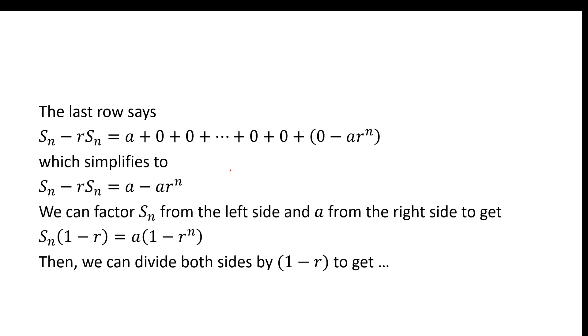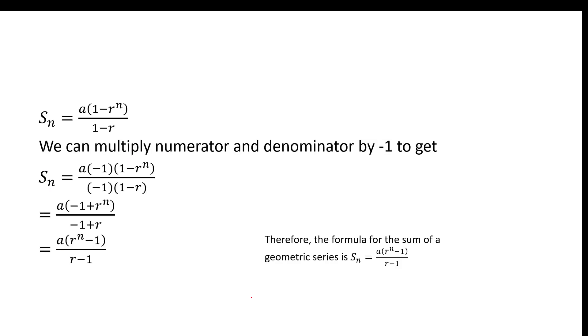Now what we can do is isolate S_N. Remember what we're trying to solve for, we're actually just trying to solve what is the sum of the first N terms. So we can common factor S_N from the left-hand side. We have S_N times 1 minus R, and that equals A times 1 minus R to the N. Then what we can do is divide both sides by 1 minus R, and we'll get S_N equals A times 1 minus R to the N over 1 minus R.